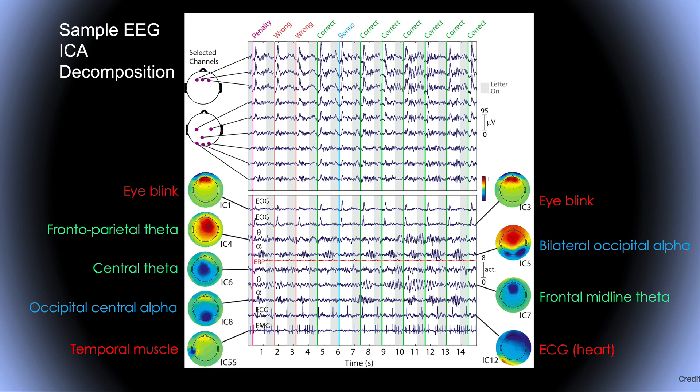All these components are mixed together to create what's on the top, which is the real EEG in which they're all mixed together. So it's a powerful way to separate these cognitive and artifactual processes.